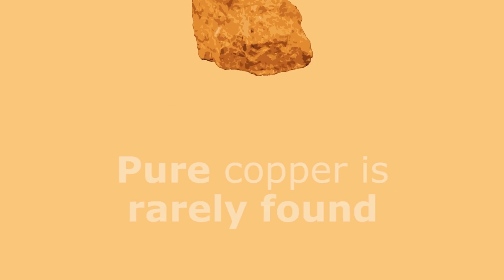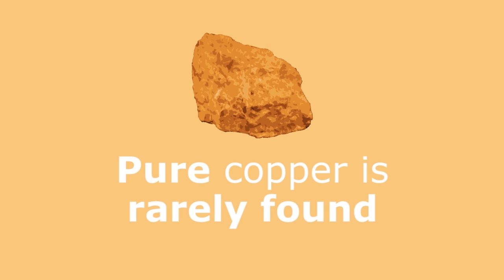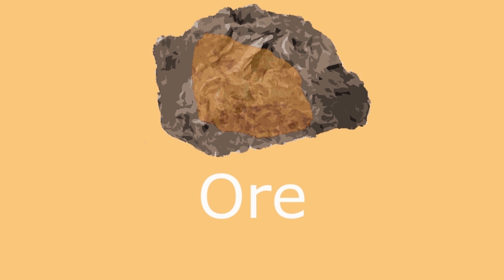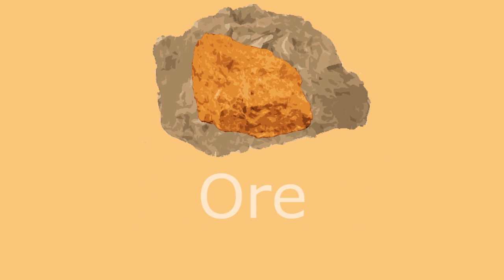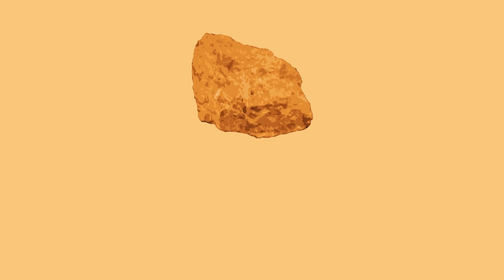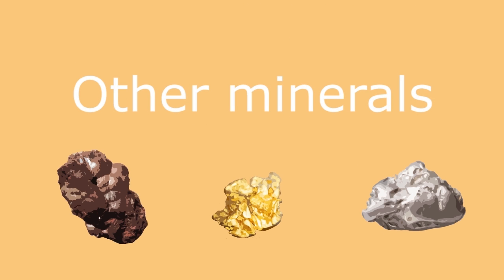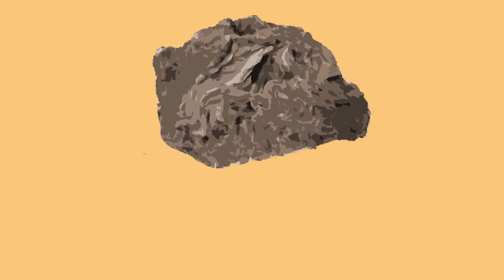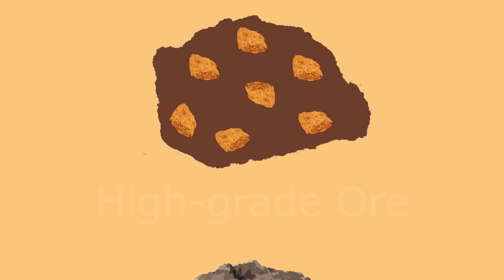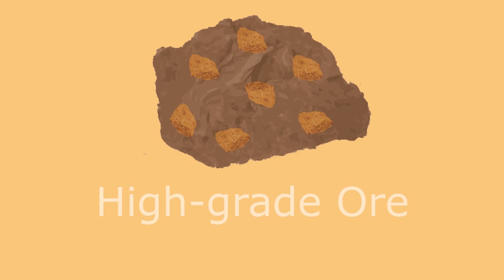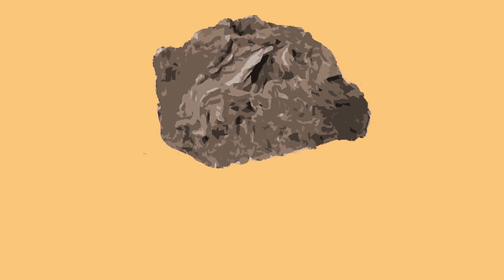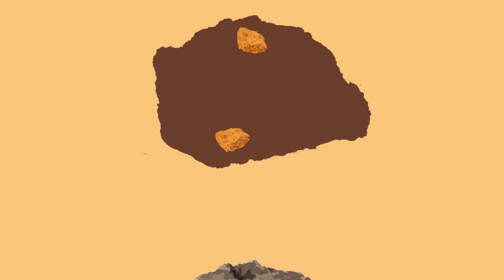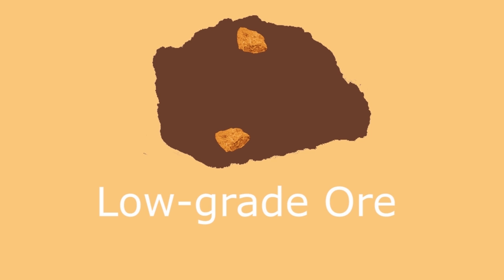Pure copper metal is rarely found. Usually the copper is found in an ore. Ores contain copper metal but also other minerals. If the ore contains lots of copper metal, it is a high grade ore. If it contains low amounts of copper metal, it is a low grade ore.